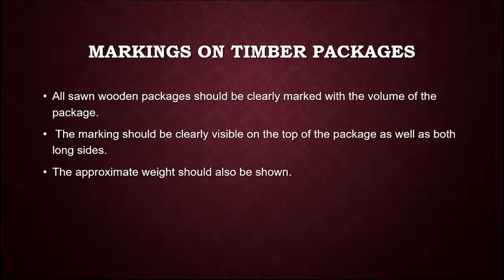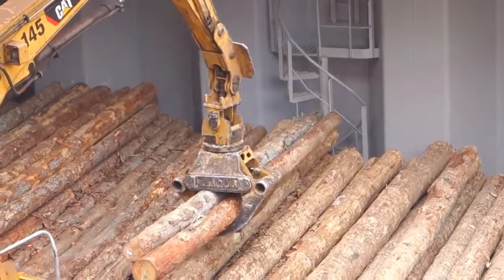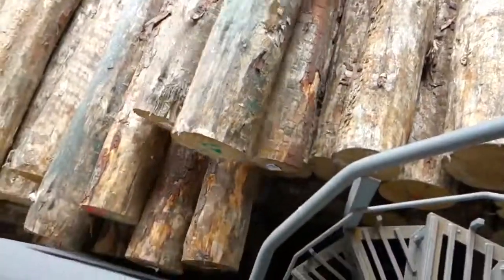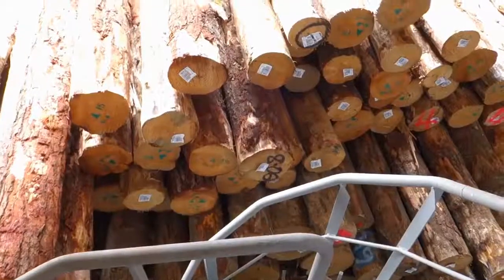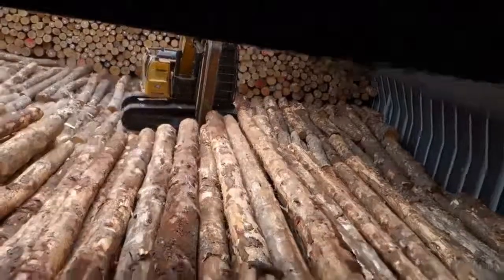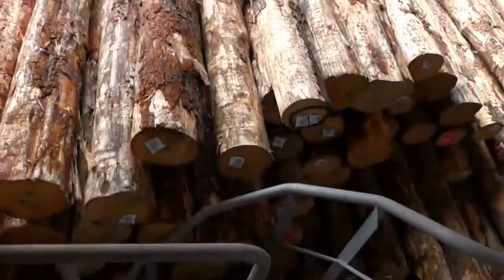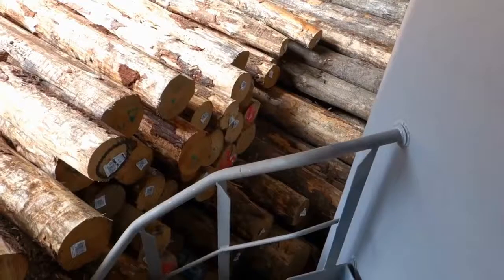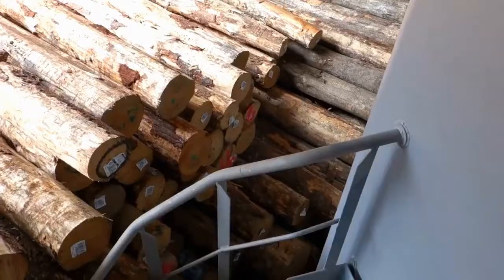Just like containers or packaged goods have markings on them, timber cargoes will also have markings. All sawn wooden packages should be clearly marked with the volume of the package, visible on the top as well as both sides of the package. The approximate weight must also be marked on the package. Usually this is done using a barcode label that is scanned, and the information and weight of the timber log are recorded in the computer system.